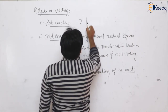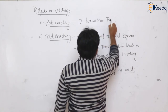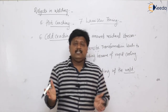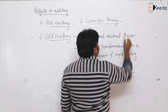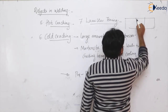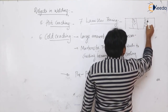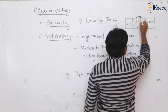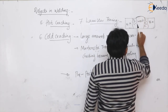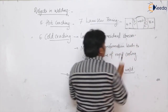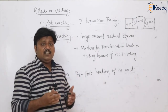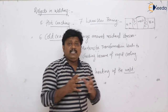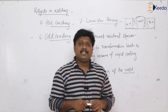The next defect is lamellar tearing. This is a crack which separates the heat affected zone from the base metal. In fusion welding, heat affects the base metal up to a certain area where metallurgical changes occur. The crack separating the base metal from the heat affected zone is caused by elongated inclusions present in the weld — these are known as lamellar tears.